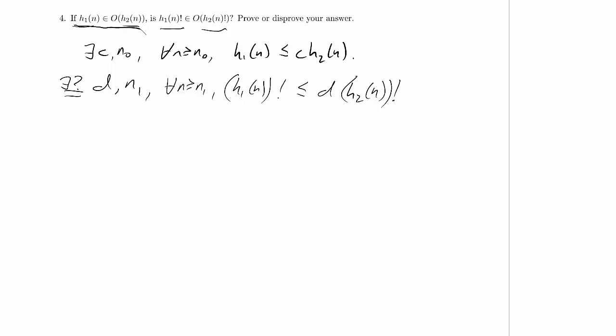My first temptation here would be to say, oh yeah, absolutely this is true, because we've got this constant up here, and we can just reuse that constant down below, but the trouble is that we're multiplying h1 of n by h1 of n minus 1 by h1 of n minus 2, and so on and so forth, on the left down here.